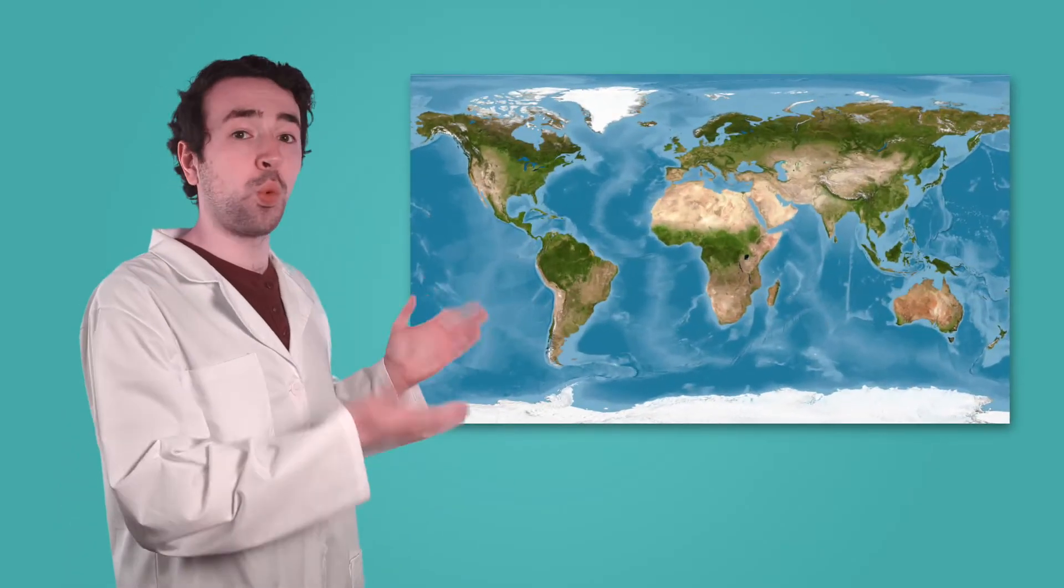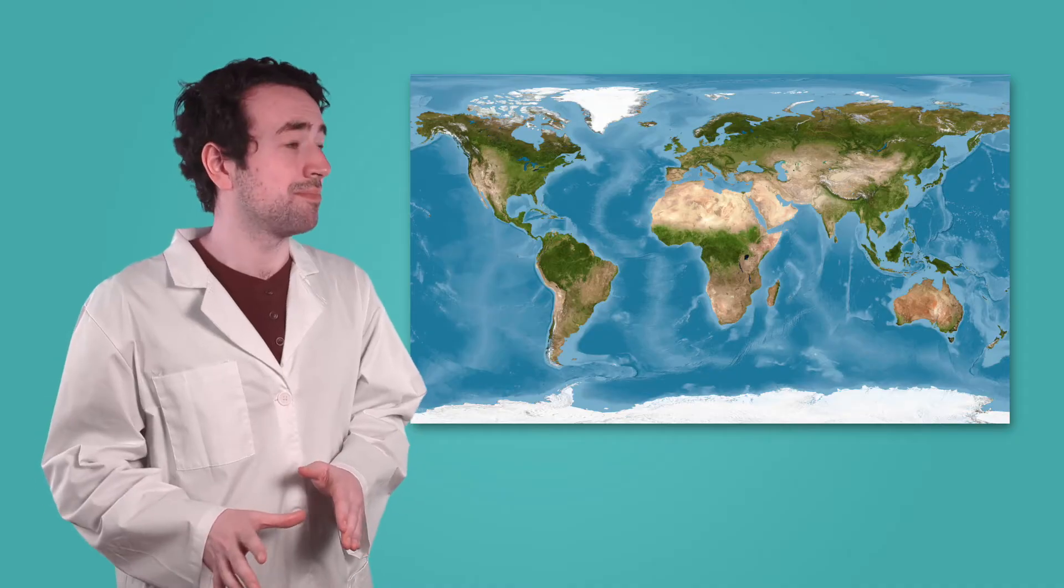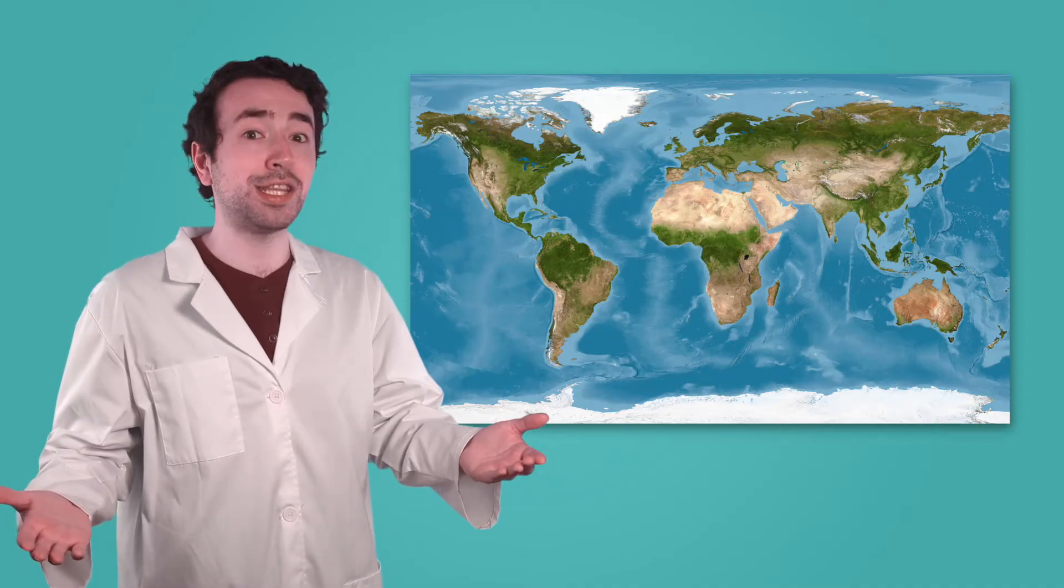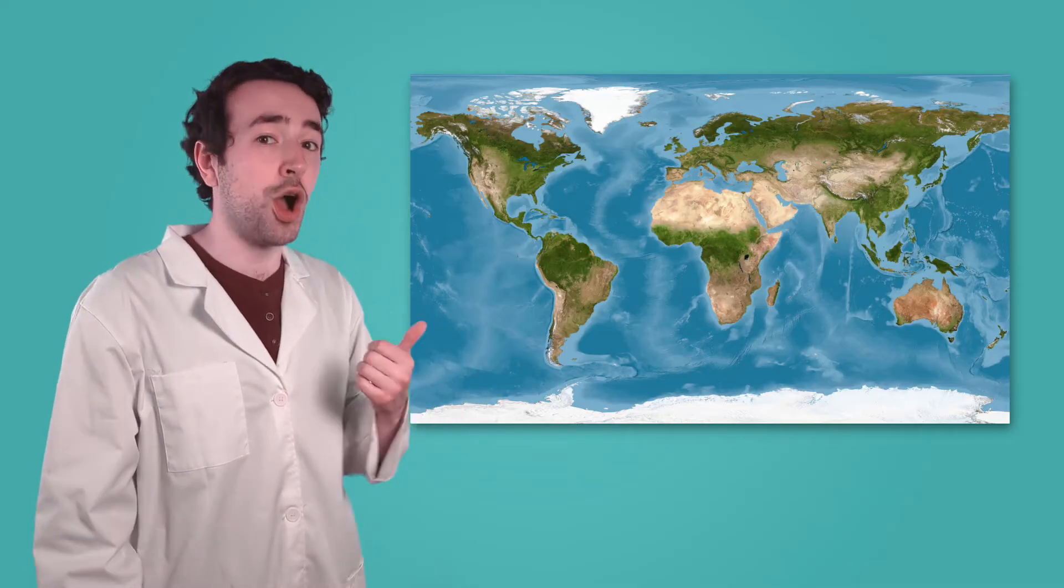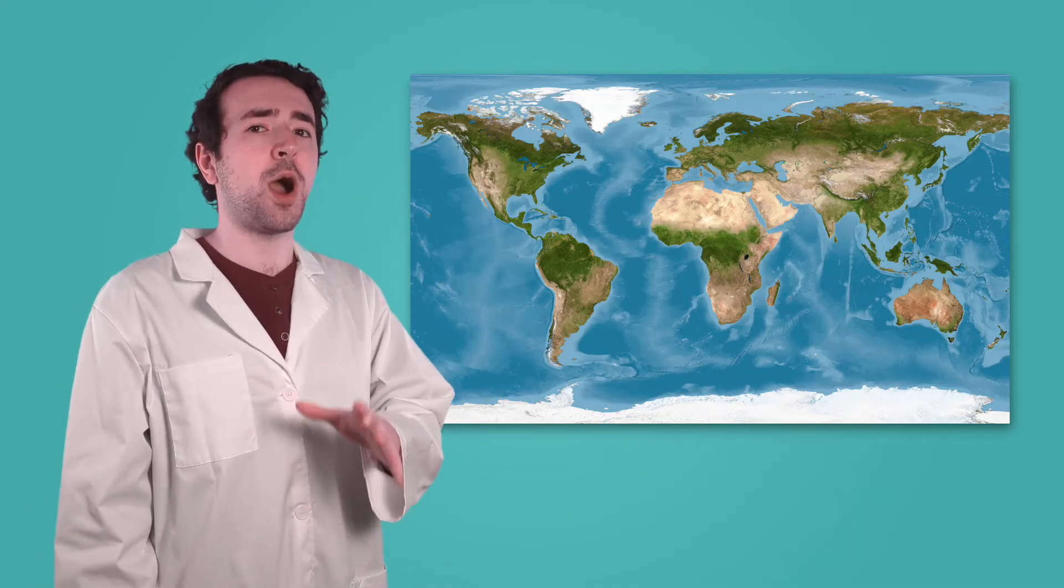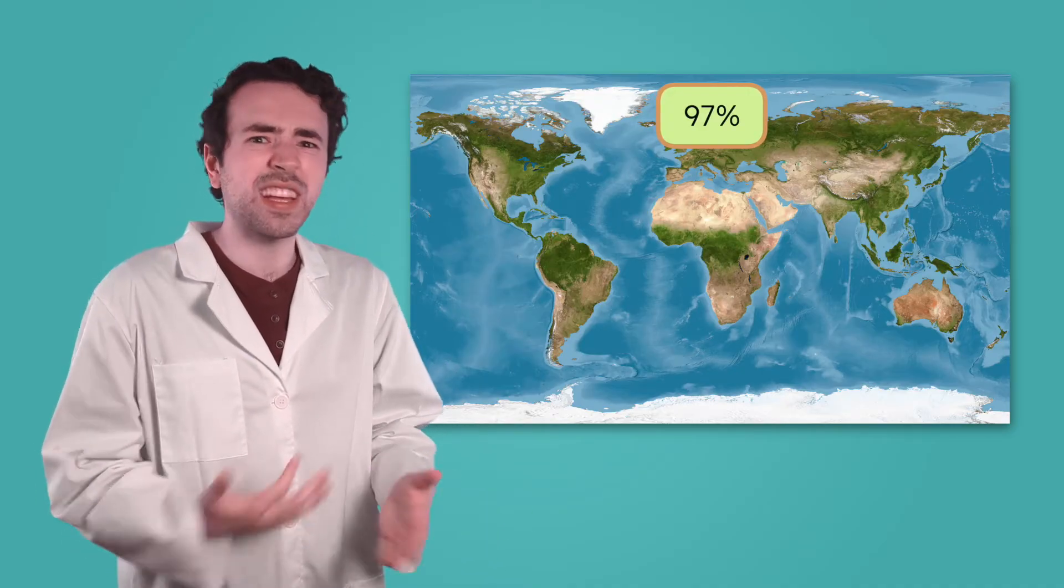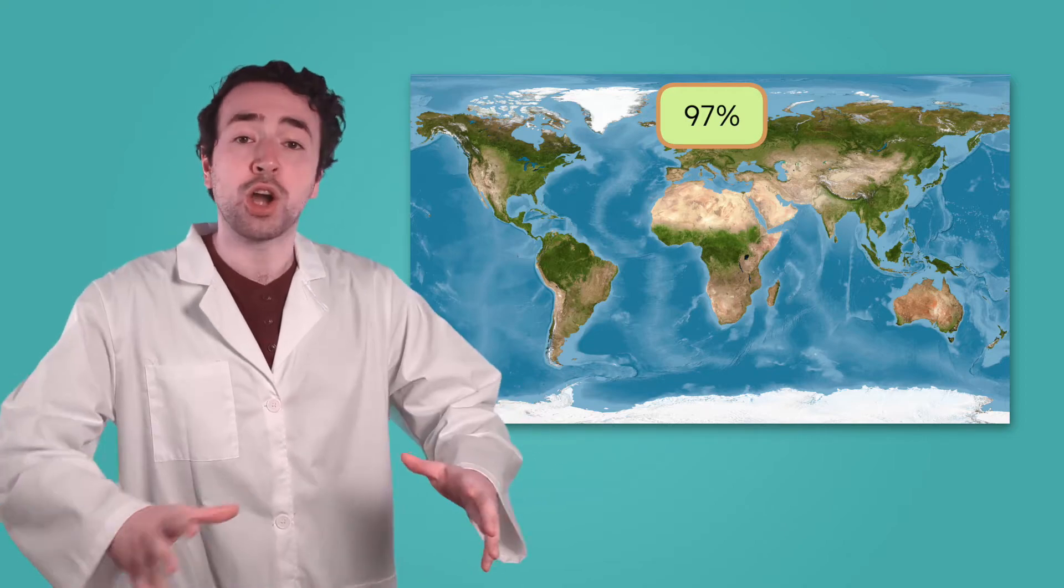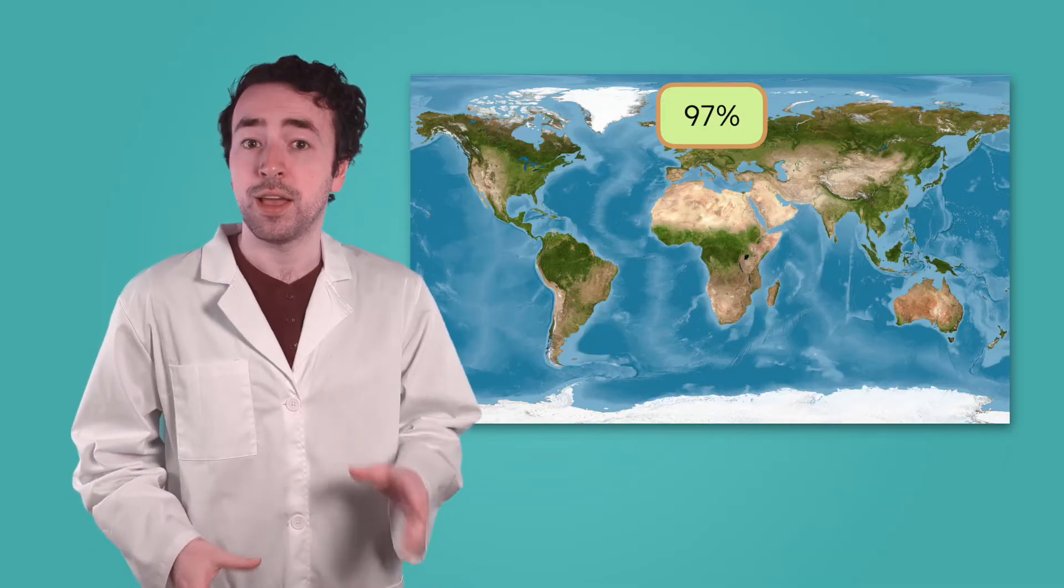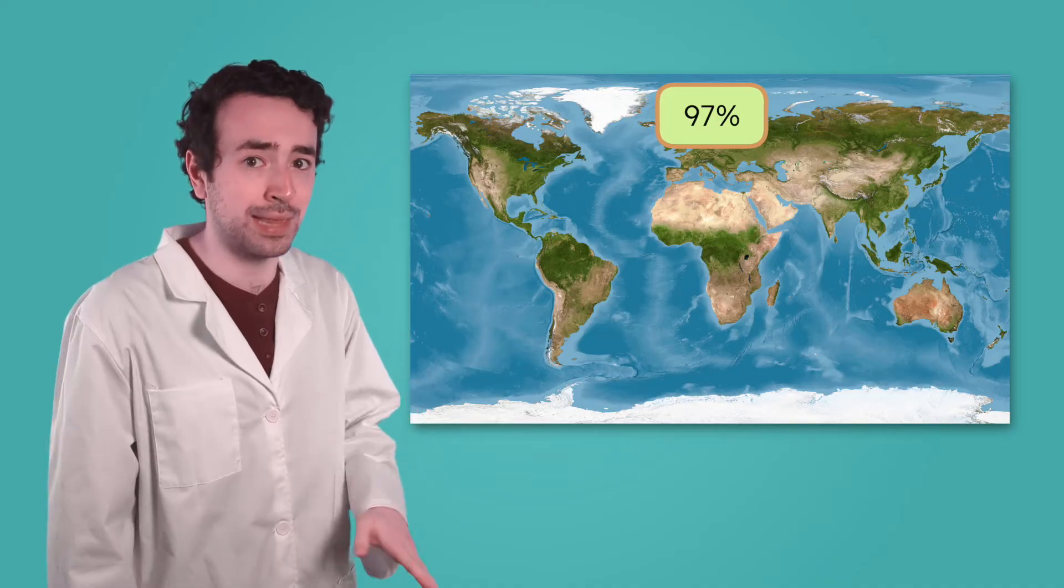But all that water isn't spread across the earth evenly. Take a look at this world map. Where do you see the most water? When I look at this map, I see a whole lot of blue. That's because most of the water on earth is in the oceans. The oceans make up a whopping 97% of earth's water supply. That's a ton of water. The oceans are so big that they stretch across the globe, covering the huge areas between continents. If you traveled by boat, you could sail for weeks without ever seeing land.